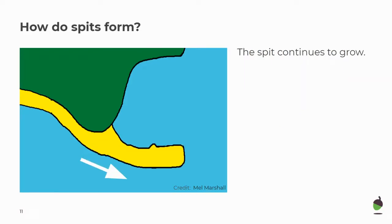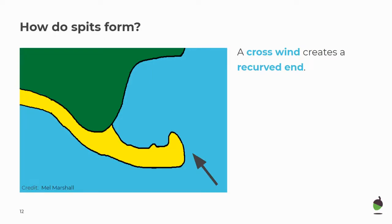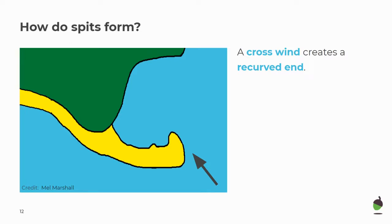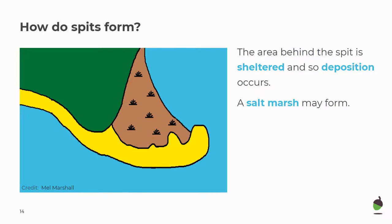The spit will continue to grow over time. Sometimes there's a crosswind which creates a recurved end. So the prevailing wind was southwesterly but sometimes you will get the wind going in a different direction. Because the sand is not stable, it can be blown at the end to make a recurved end. That spit will continue to grow. The area behind the spit is sheltered — the spit is blocking that area from the wind — so deposition occurs. This can result in a salt marsh forming.